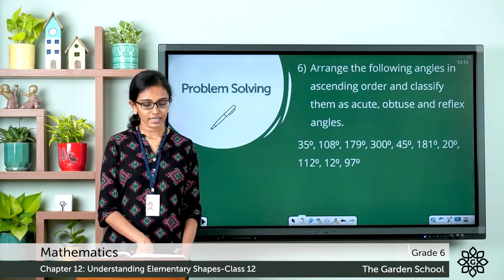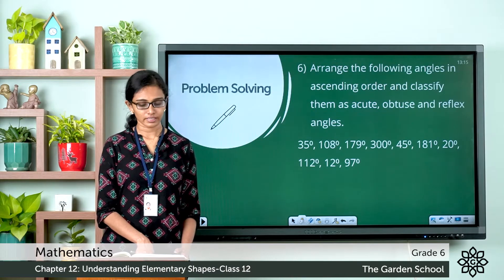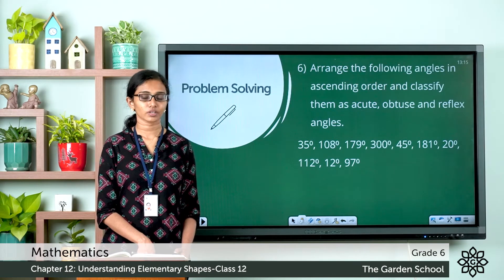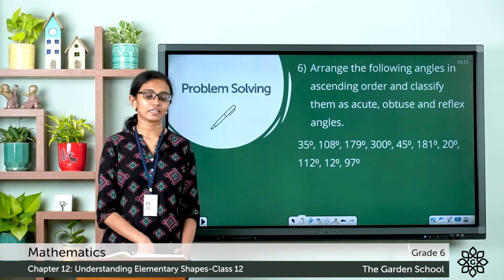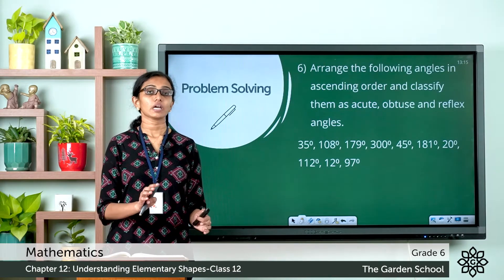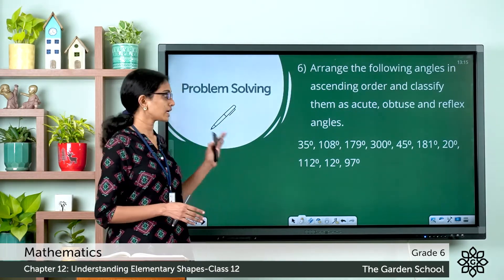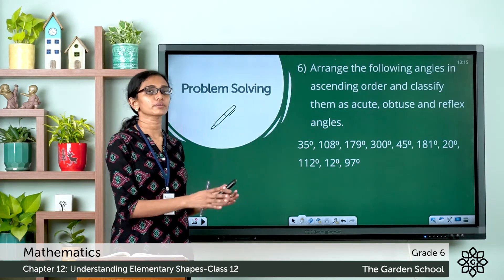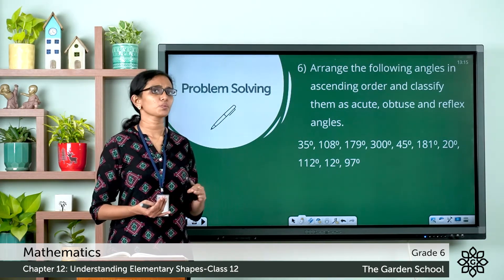Question 6 says: arrange the following angles in ascending order and classify them as acute, obtuse and reflex angles. You are given a few angles and you have to identify and classify them as acute, obtuse and reflex angles.